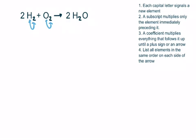A coefficient, which is a large number that precedes a formula, multiplies everything that follows it up until either the end of the equation, a plus sign, or an arrow. So in this case, we only have H2O following the coefficient.